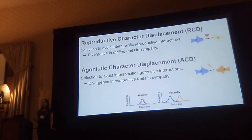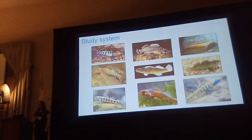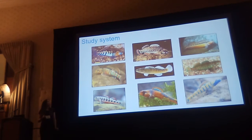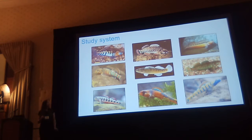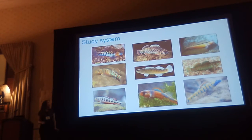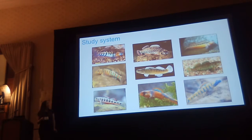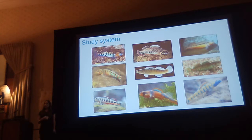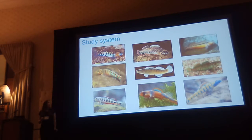We're still trying to figure out the dynamics of these two different types of processes. I use darters as a study system to examine reproductive and agonistic character displacement. Darters are a highly diverse group of North American stream fishes — there are over 250 described species occurring throughout the eastern half of the United States. For a long time people have thought that female mate choice and sexual selection was driving diversification in this group, because males have these species-specific nuptial color patterns. They also hybridize pretty frequently.